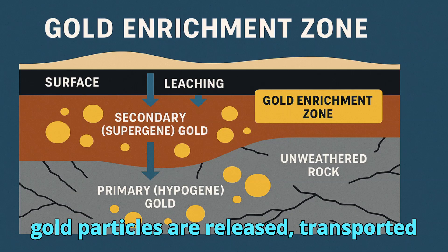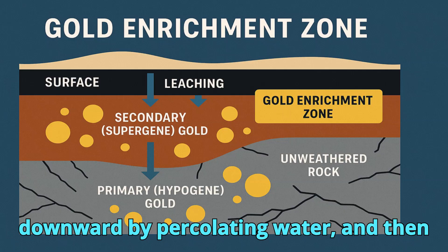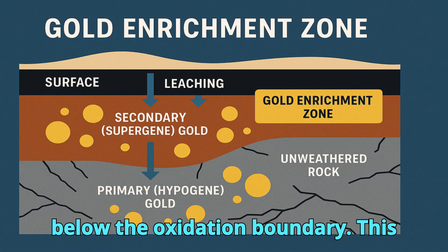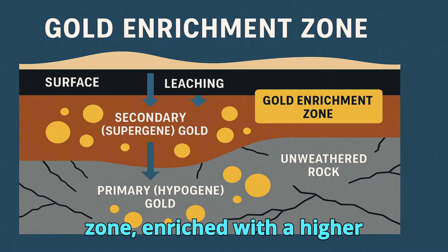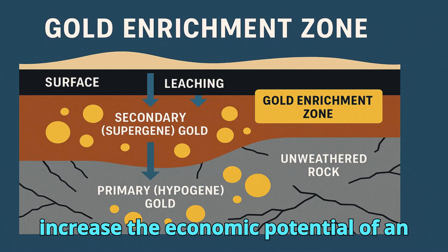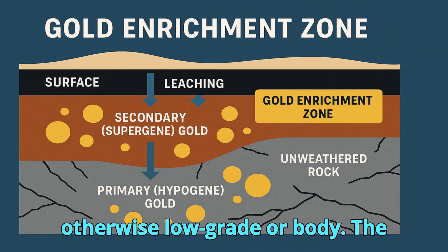gold particles are released, transported downward by percolating water, and then redeposited in a narrow layer, often just below the oxidation boundary. This zone, enriched with a higher concentration of gold, can greatly increase the economic potential of an otherwise low-grade ore body.